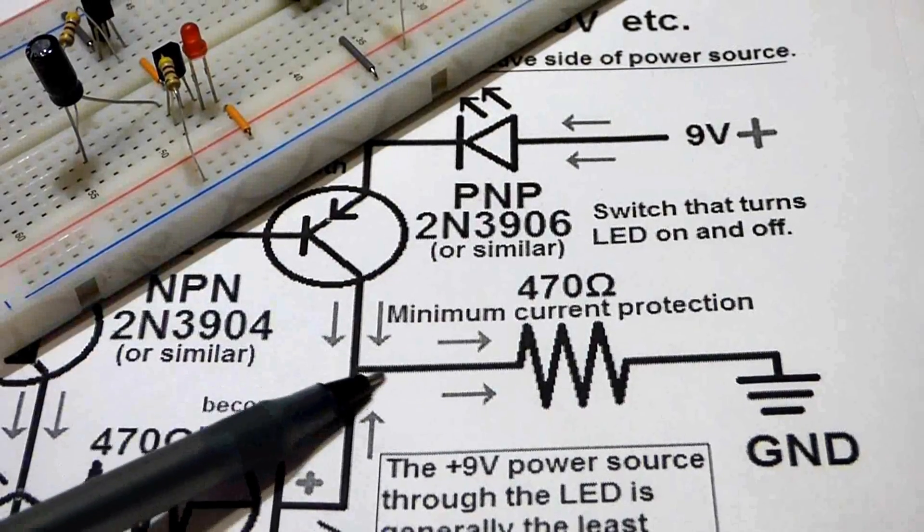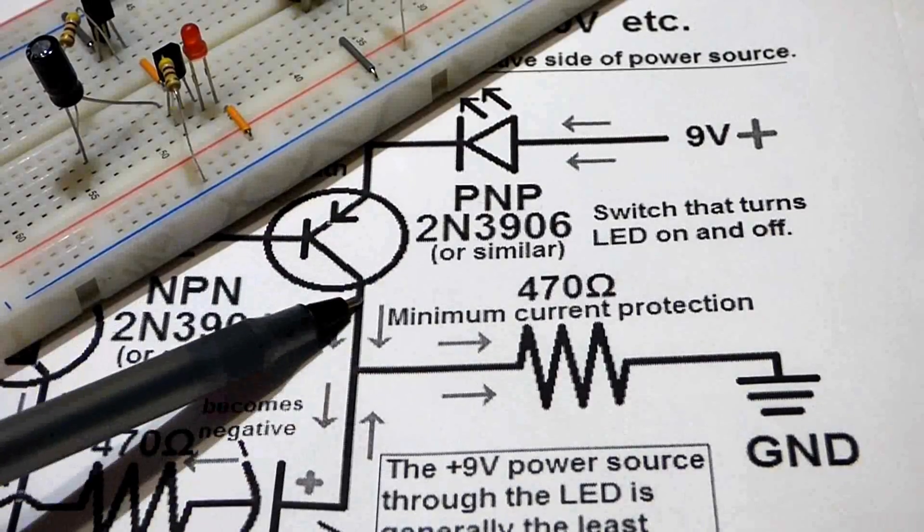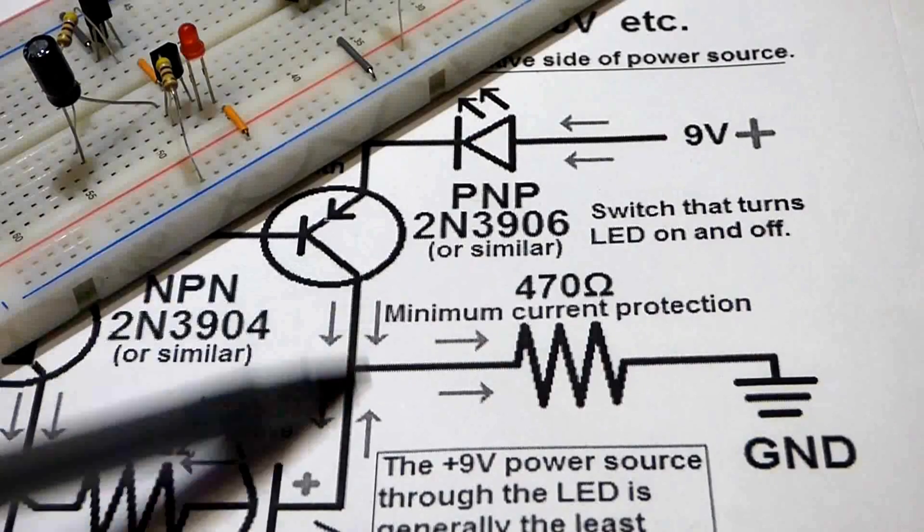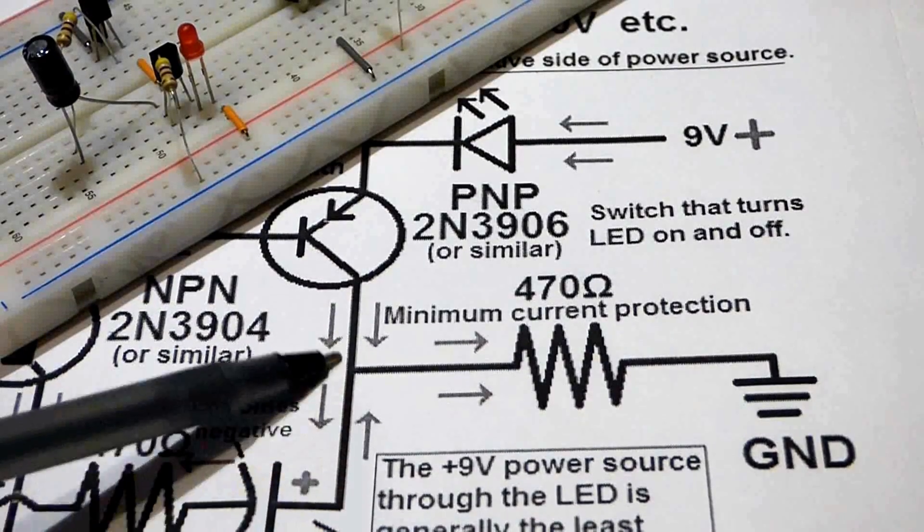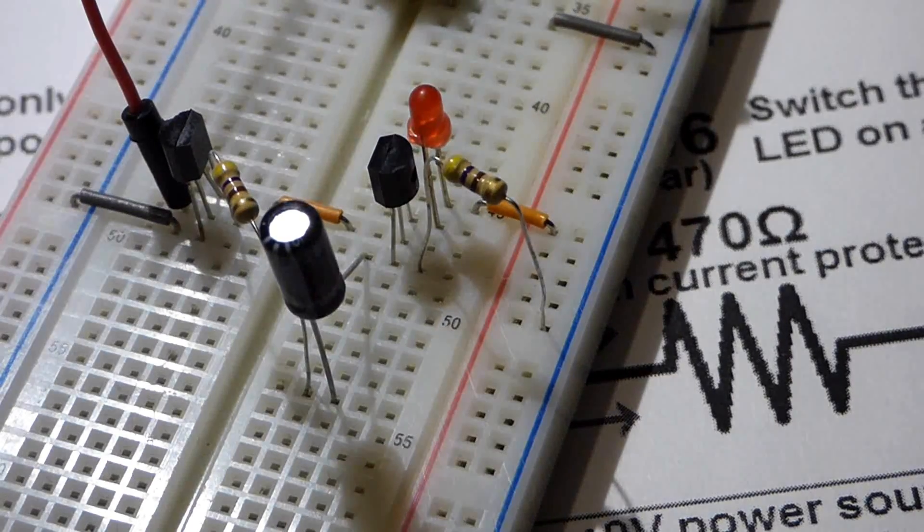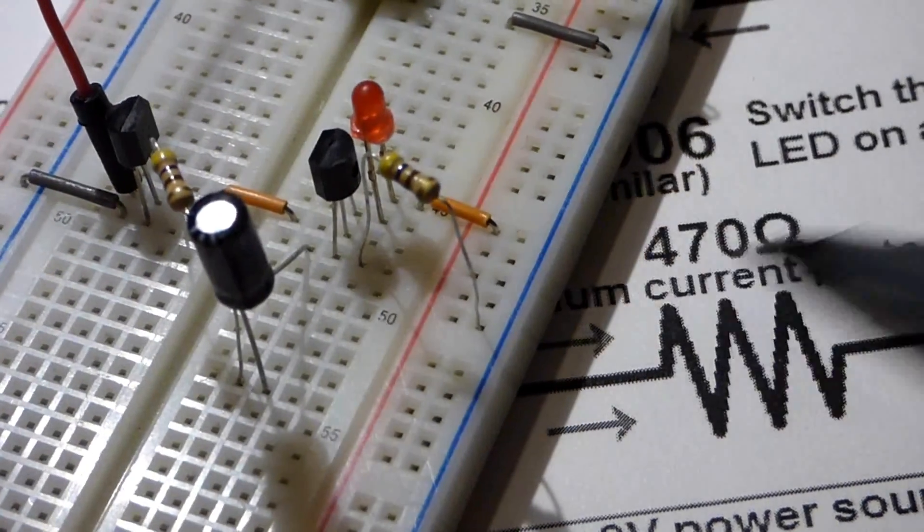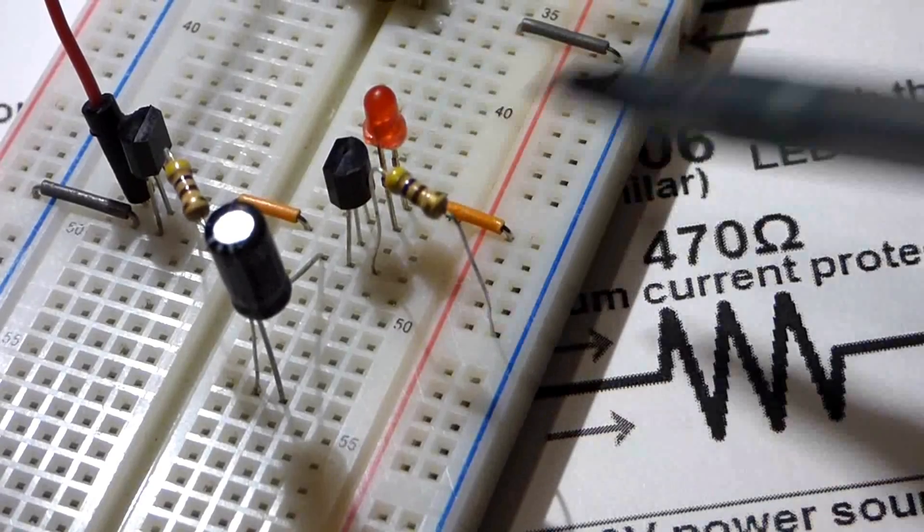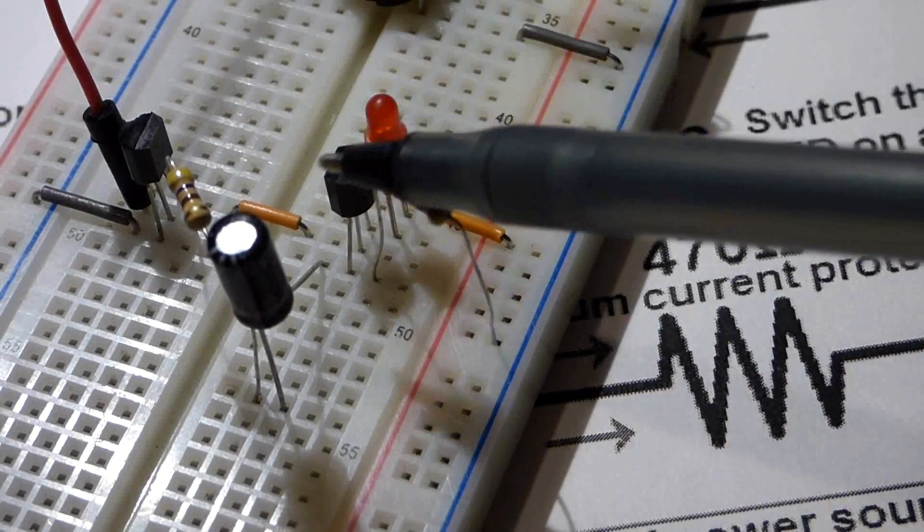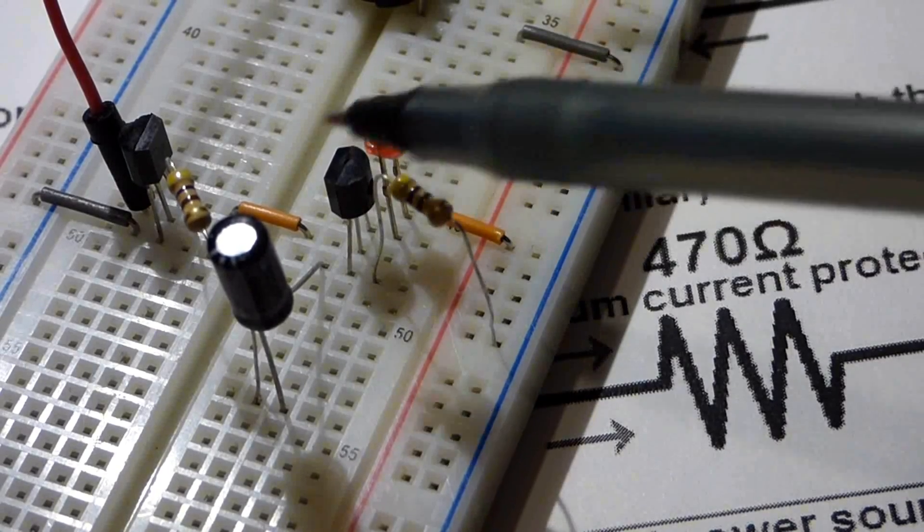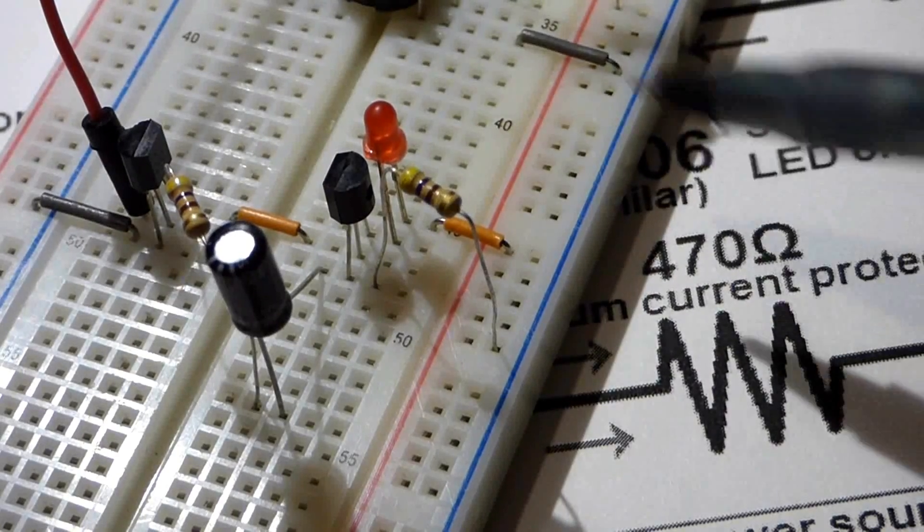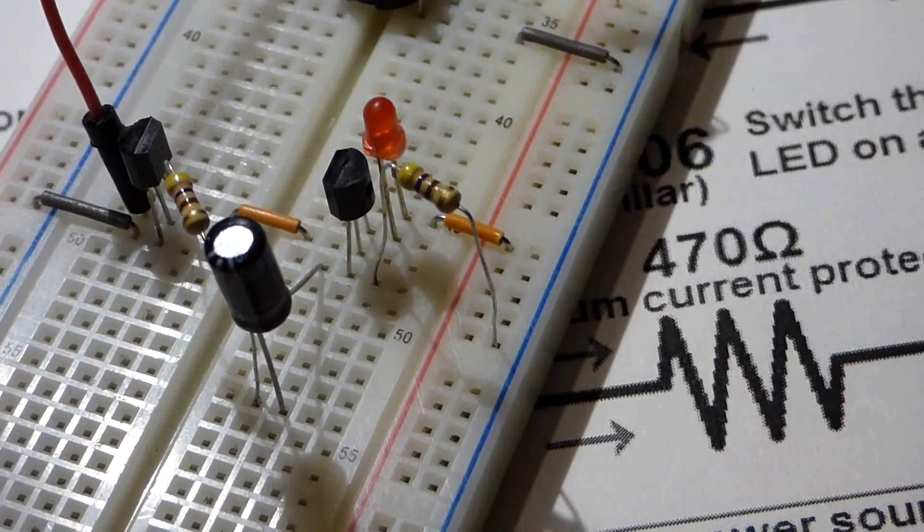So what we will do is attach a resistor to the collector side right to ground for protection. And also remember the collector is connected to the positive side of the capacitor. And here we have the 470 ohm resistor that's meant to protect the LED, because the voltage is going to come to the LED, to the transistor when it's on, and then through the resistor. So 470 ohm is good to protect the LED from a 9-volt battery.